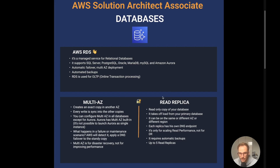Read replicas are async copies of your database, so there can be a little delay between the data in your primary copy and the read replica. The idea is to take load off your primary database — at the application level you decide to use a read replica for read-heavy workloads. Read replicas can be in the same or different availability zone, or even a different region. Each read replica has its own DNS endpoint. It's only for scaling and improving read performance — not for disaster recovery. It requires automatic backups and supports up to five read replicas.